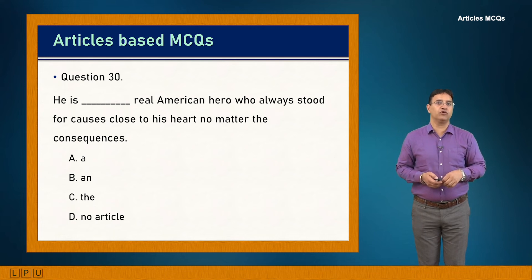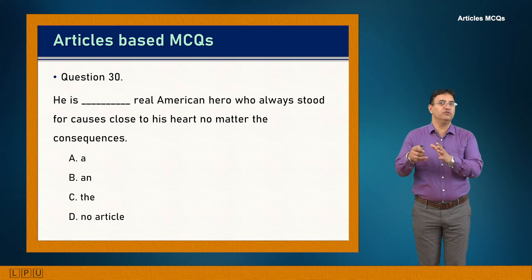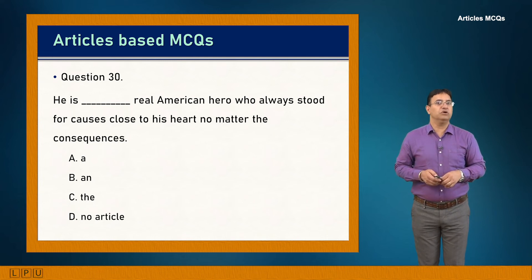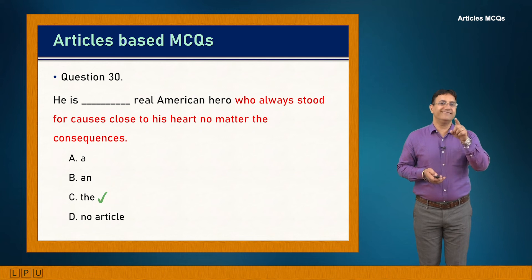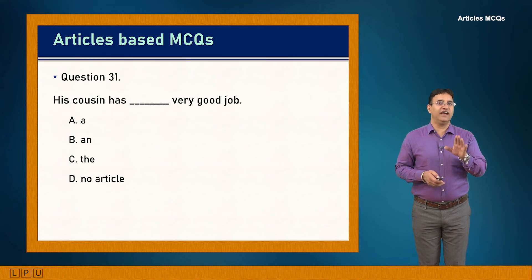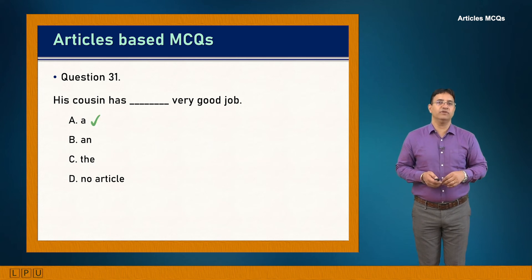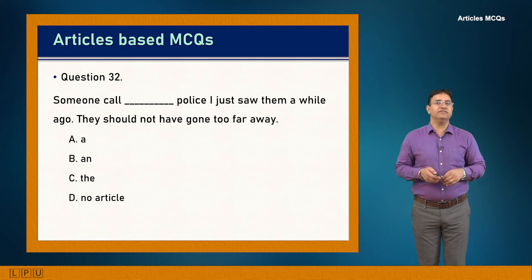Question 30: He's the dash real American hero who always stood for causes close to his heart no matter the consequences. The hero is identified by the relative clause — definite. Answer is C: 'He is the real American hero...' Question 31: His cousin has dash very good job. Answer is A: 'His cousin has a very good job.'